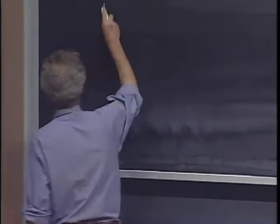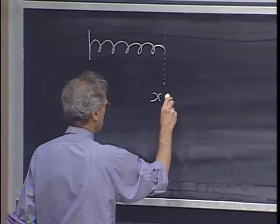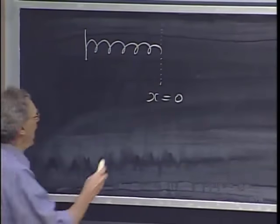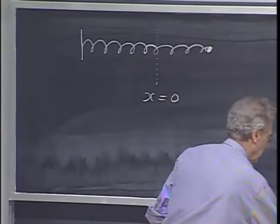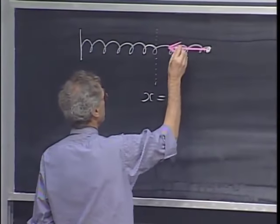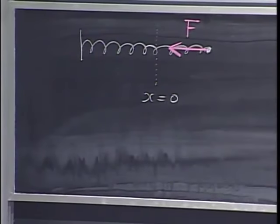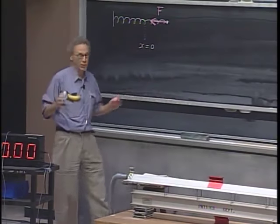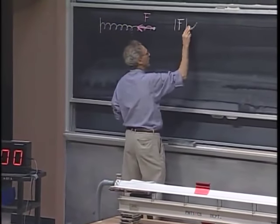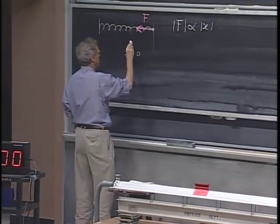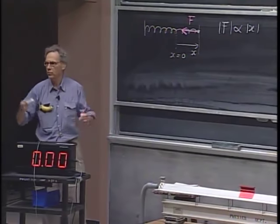If I have a spring, this is the relaxed length of the spring. I call that x equals zero, and I extend the spring with a displacement x. There is a force that wants to drive the spring back to equilibrium. It is an experimental fact that for many springs — we call them ideal springs — this force is proportional to the displacement x. If you make x three times larger, the restoring force is three times larger.